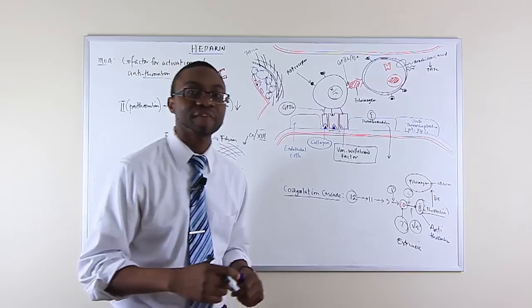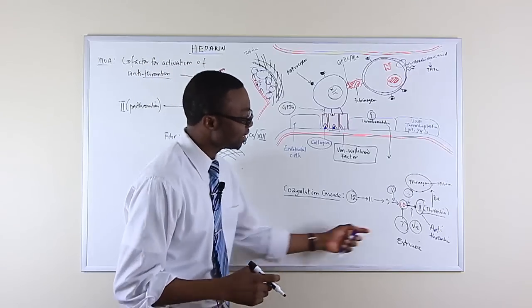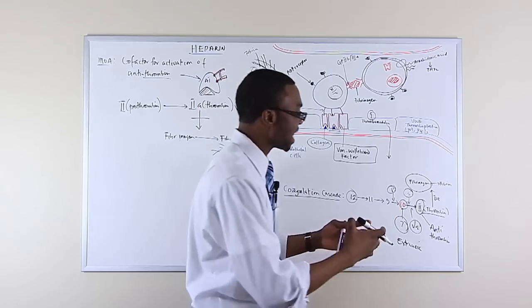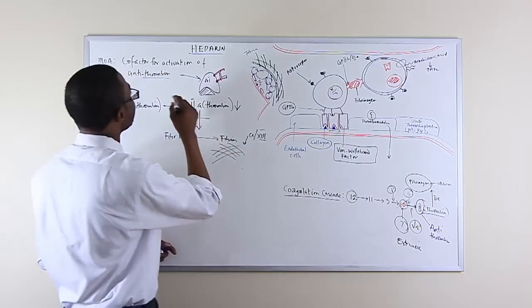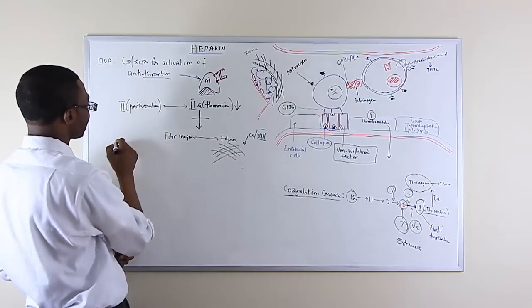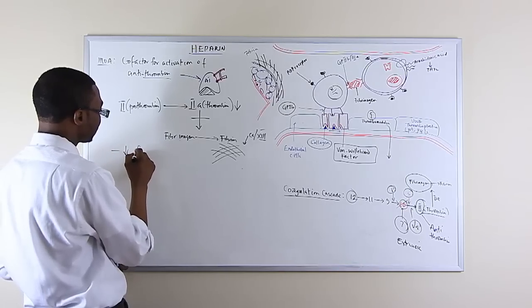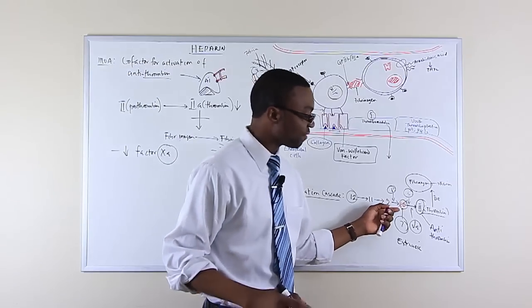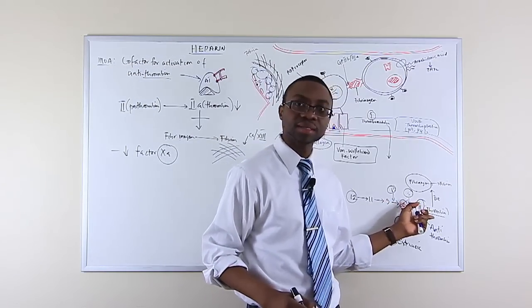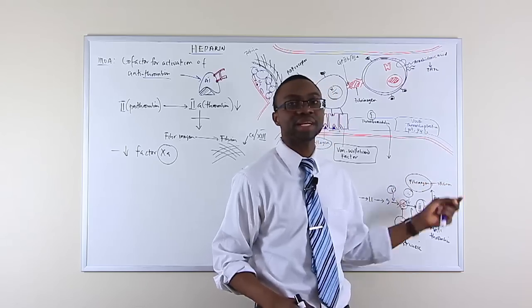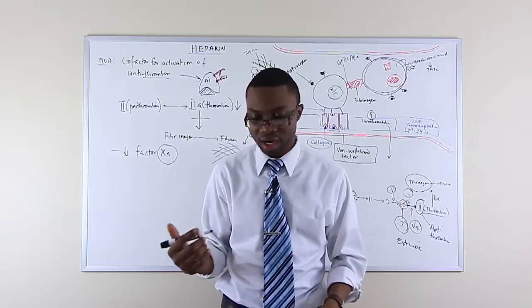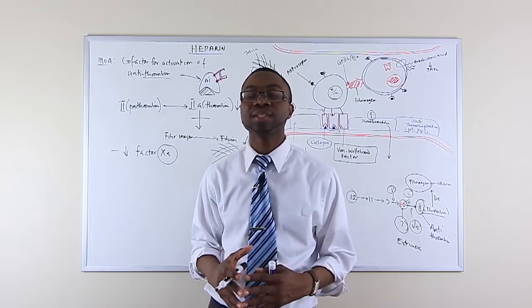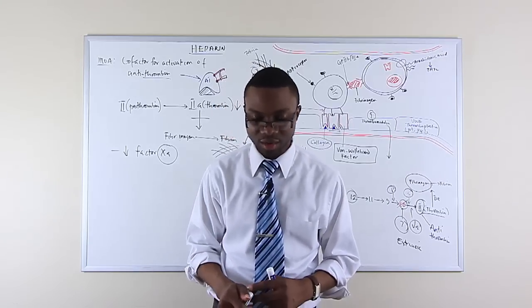Heparin is also going to decrease factor 10a. Factor 10 is converted to factor 10a, and once it decreases the amount of factor 10a, if you don't have factor 10a you can't make thrombin, you can't make fibrin, you can't form a clot. That is the mechanism of heparin — its job is to function as an anticoagulant.